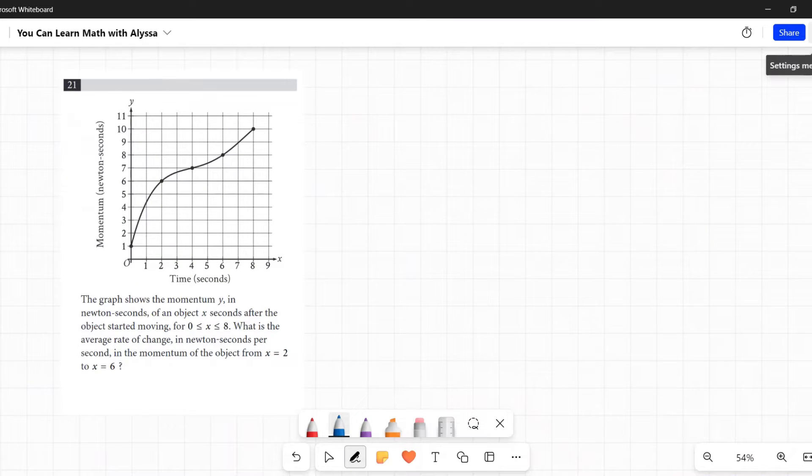Number 21. The graph shows the momentum y in newton seconds of an object x seconds after the object started moving, for 0 ≤ x ≤ 8. What is the average rate of change in newton seconds per second in the momentum of the object from x equals 2 to x equals 6?